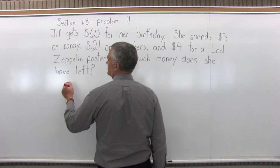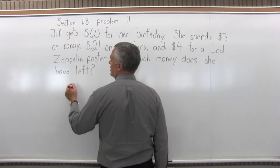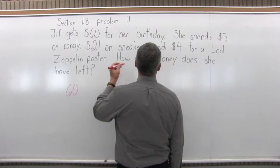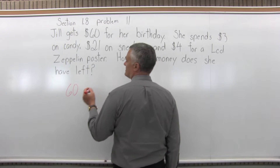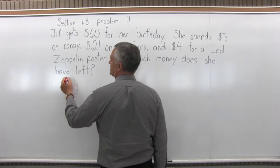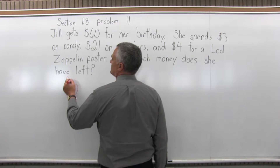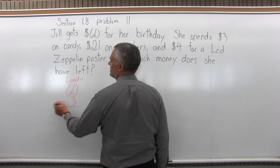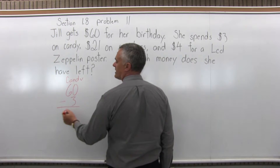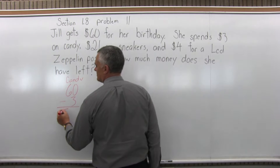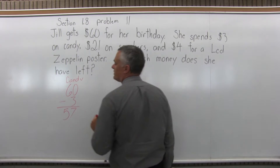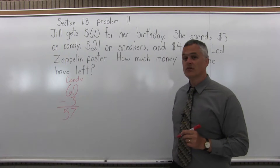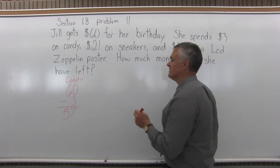Well, let's start with the $60, and in terms of the candy, she spends $3. This is what's left after candy, and we want to subtract that. So if you have $60 and you spend $3, you're down to $57.